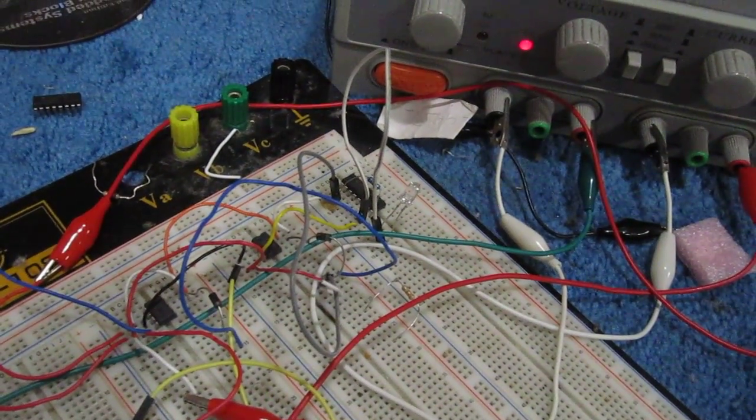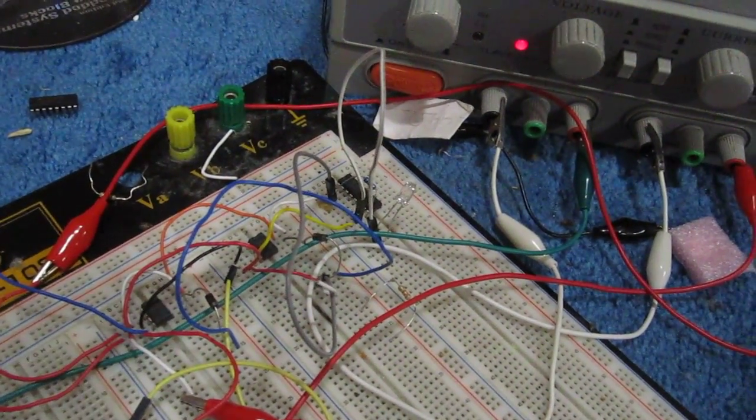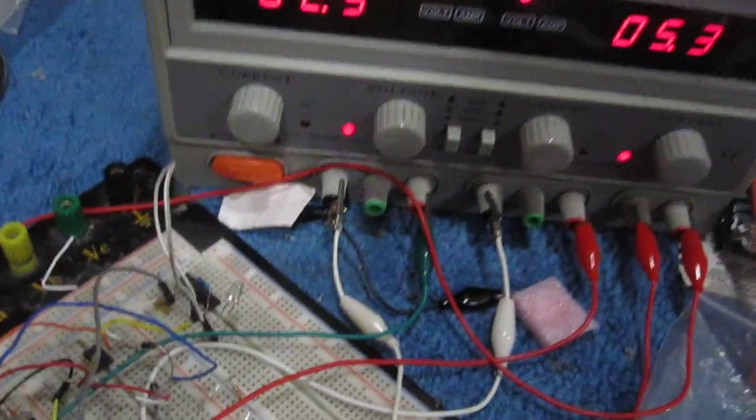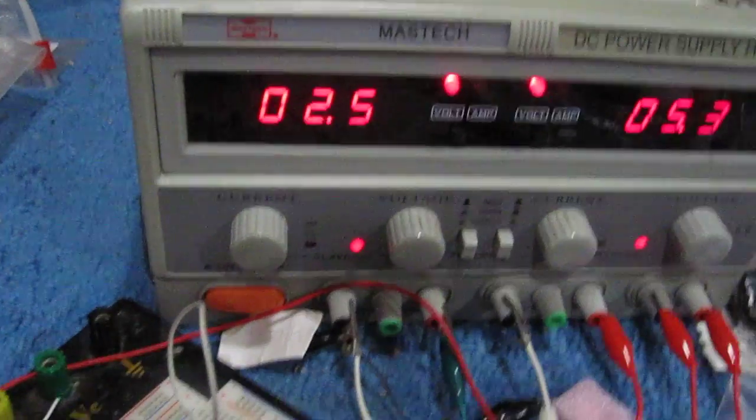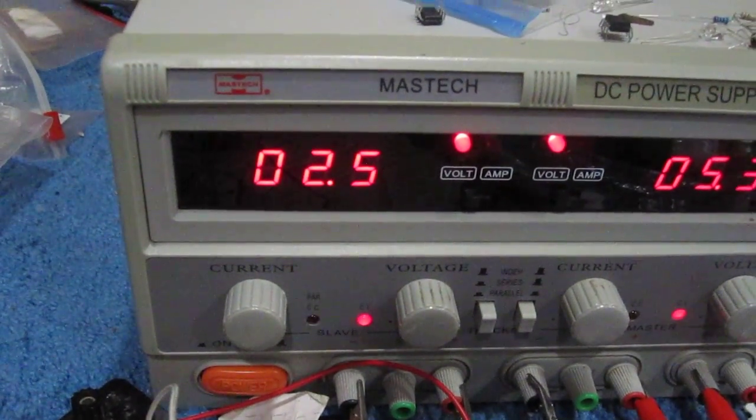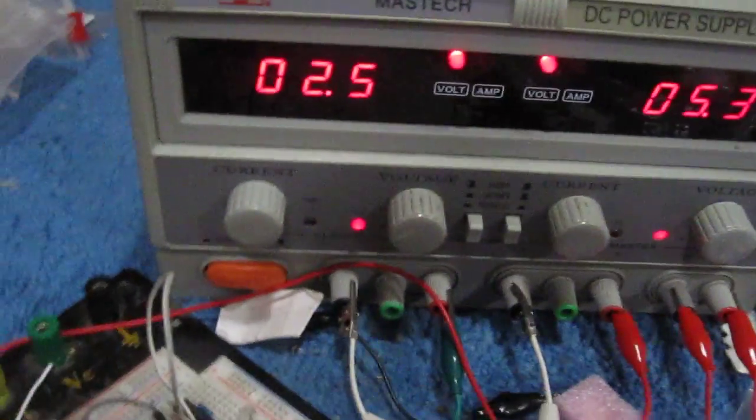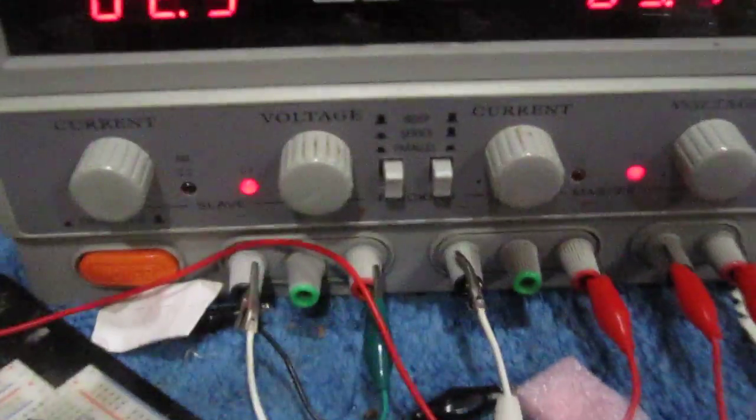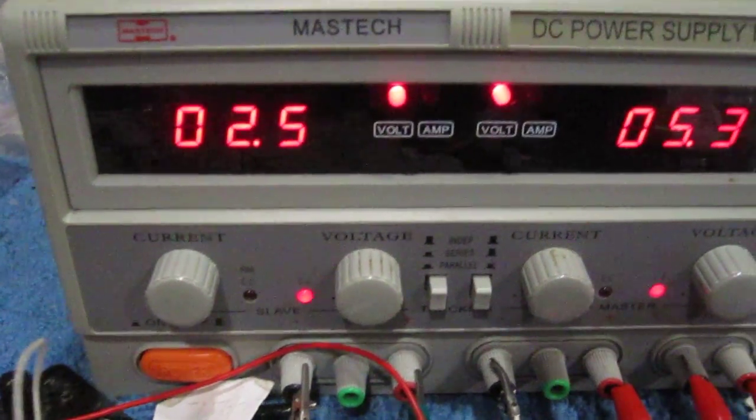In this circuit, our low reference voltage is 2.5 volts, which is set right there to the left, and our high reference voltage is the fixed 5 volts that comes out of this socket.